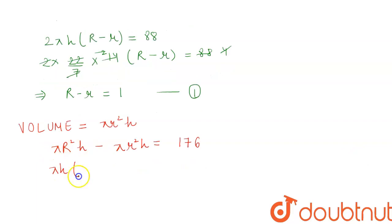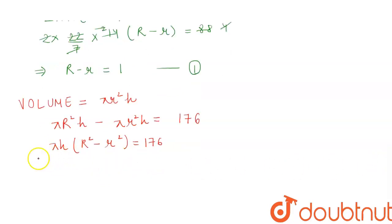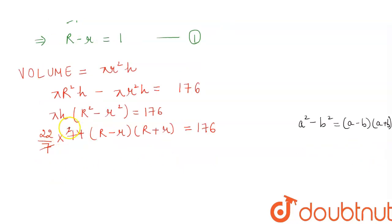Now if we take out πh common we will get R² - r² = 176. Putting the values we will get 22/7 × 14 × (R - r)(R + r) = 176. Here we have applied the formula of a² - b² which is equal to (a - b)(a + b). This cancels by 7, this cancels out, this becomes 88, and this cancels by 4.